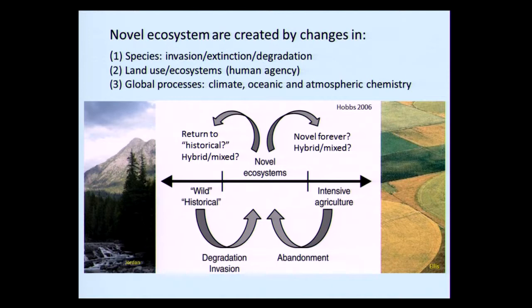Novel ecosystems can occur when agricultural fields are abandoned. They can go to novel states, and whether they'll stay novel or remain some kind of hybrid mix forever isn't quite known. They may also possibly return to historical conditions if they haven't been too disturbed or if people are involved in restoration.